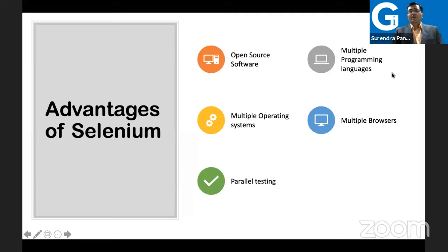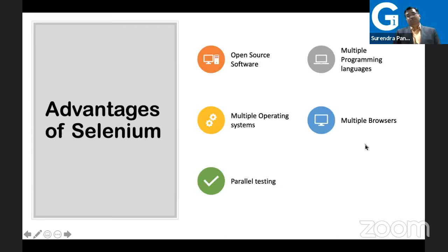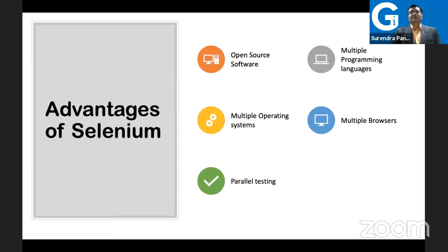The advantages of Selenium: it is open source software, so it is freely available with no need to buy any license. It supports multiple programming languages, so you can use your language of choice. It supports multiple operating systems, multiple browsers, and also allows parallel testing. These are the main benefits of Selenium.